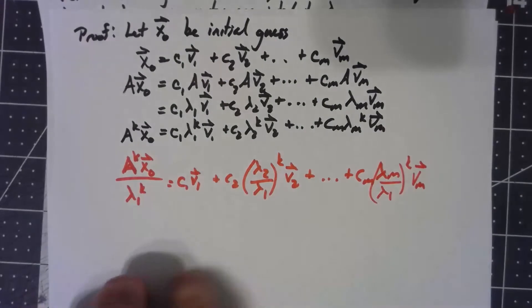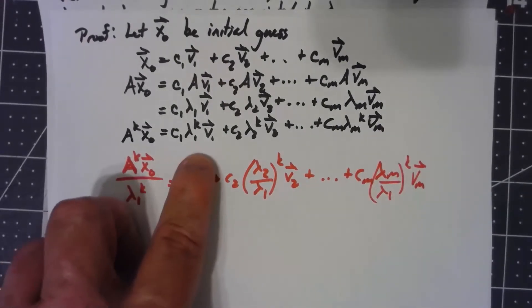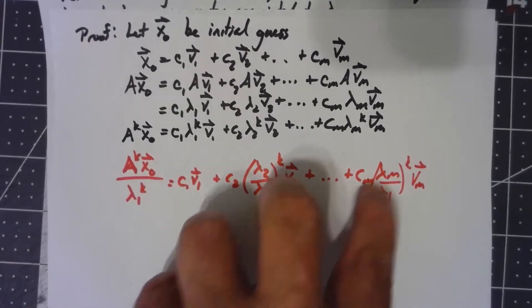What that's going to do is, since I'm dividing everything by lambda_1^k, I'm just going to write it as lambda_2 over lambda_1 to the k.